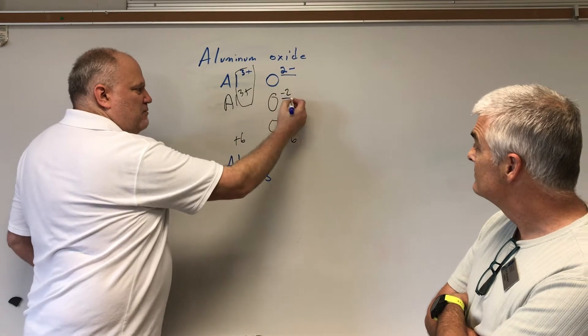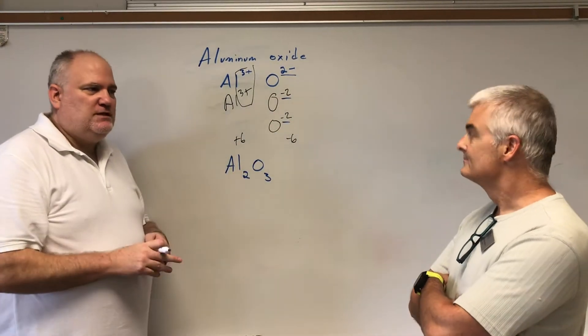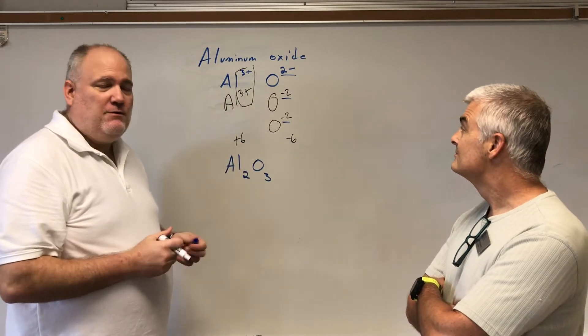So how do we write that? Whenever we have a number, we put them as a subscript. Al two. And here we have three of these, so we're going to go O three. I want to point out something here that we did by accident. See, I wrote two minus and he wrote minus two. It does not matter. It really doesn't matter. It's personal preference.